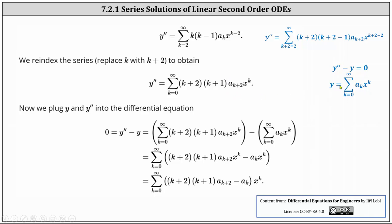Now that we have y shown here on the right in blue and y double prime, we perform substitution into the original differential equation: zero equals y double prime minus y. We have the power series for y double prime minus the power series for y. Because both indexes start at k equals zero, we can combine the power series into one sum. Notice both products contain a common factor of x to the power of k, so in the last step we factored out x to the power of k.